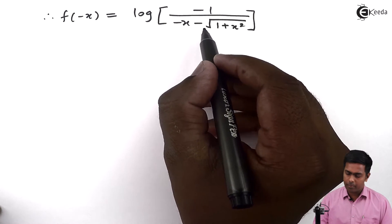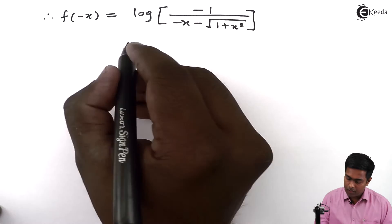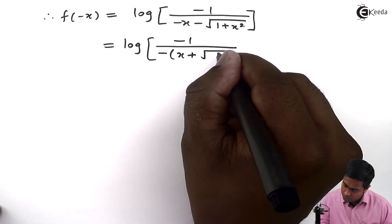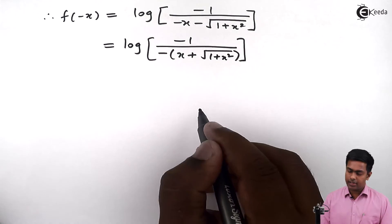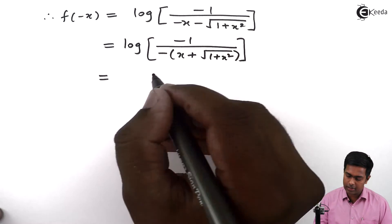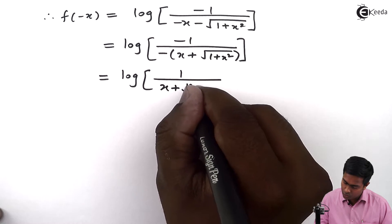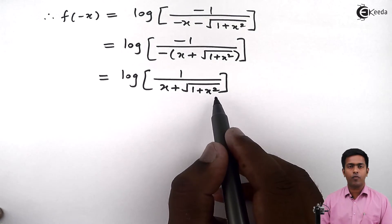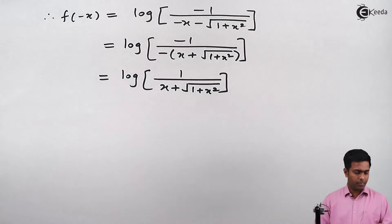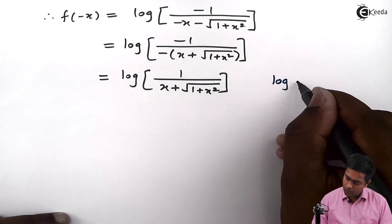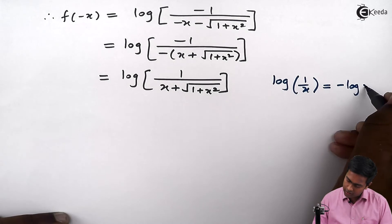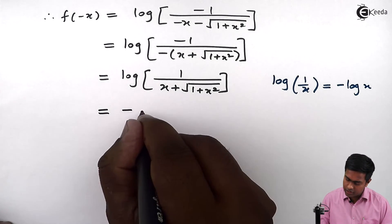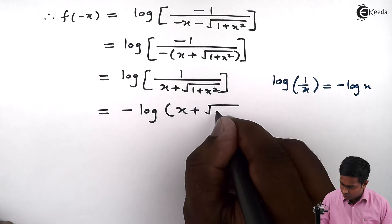Now we can take a minus sign common from the denominator, giving log of (-1 upon minus of (x plus root of 1 plus x squared)). Since both numerator and denominator are negative, they cancel and we get a positive: log of (1 upon (x plus root of 1 plus x squared)).